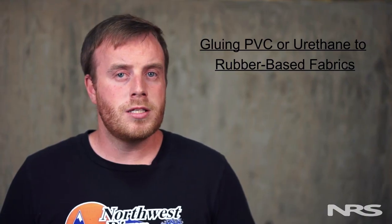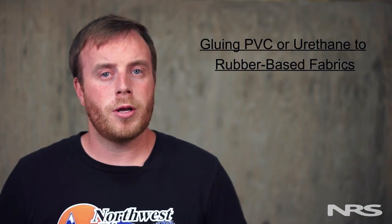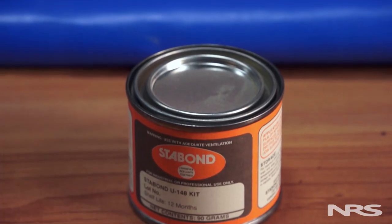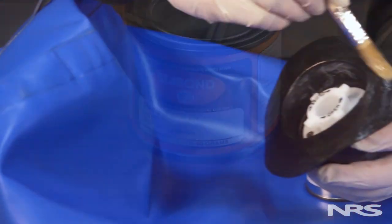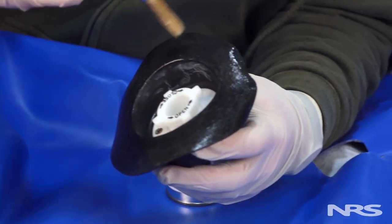In some instances you may need to glue PVC or urethane to your rubber-based fabric. For this purpose we recommend Sta-Bond, as it is designed to work well with various materials. While Sta-Bond does provide a very strong bond, it does not provide as strong a bond as a glue that is designed to work solely with one material.